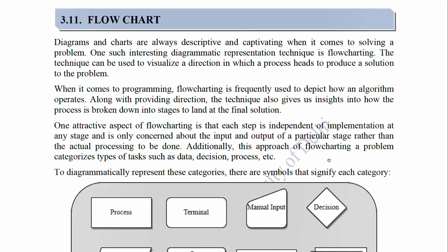3.11 Flowchart. Diagrams and charts are always descriptive and captivating when it comes to solving a problem. One such interesting diagrammatic representation technique is flowcharting. The technique can be used to visualize the direction in which a process heads to produce a solution to the problem. When it comes to programming, flowcharting is frequently used to depict how an algorithm operates. Along with providing direction, the technique also gives us insight into how the process is broken down into stages. One attractive aspect of flowcharting is that each step is independent of implementation and is only concerned about the input and output of a particular stage rather than the actual processing to be done. This approach categorizes types of tasks such as data, decision, process, etc. There are symbols that signify each category.